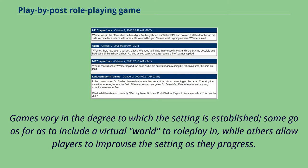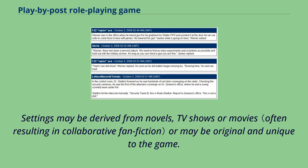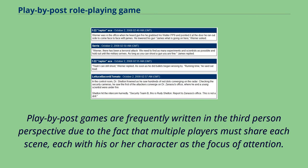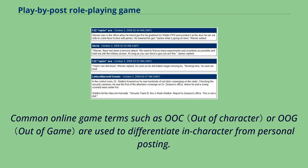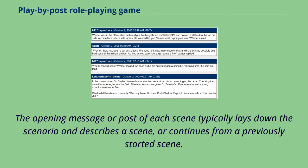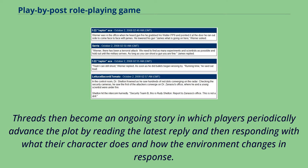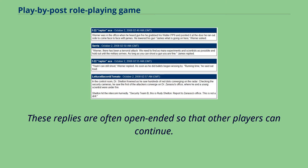Games vary in the degree to which the setting is established. Some go as far as to include a virtual world to role-play in, while others allow players to improvise the setting as they progress. Settings may be derived from novels, TV shows or movies, or may be original and unique to the game. Play-by-post games are frequently written in the third-person perspective due to the fact that multiple players must share each scene, each with his or her character as the focus of attention. Common online game terms such as OIC or OG are used to differentiate in-character from personal posting. The opening message or post of each scene typically lays down the scenario and describes a scene, or continues from a previously started scene. Threads then become an ongoing story in which players periodically advance the plot by reading the latest reply and then responding with what their character does and how the environment changes in response. These replies are often open-ended so that other players can continue.